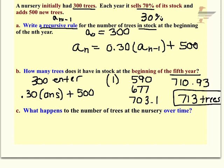And then part C says, what happens to the number of trees at the nursery over time? Now, if you keep pressing enter on your calculator, it's going to start approaching 714.2857, et cetera, and then it just plateaus. So it's kind of like an asymptote. From a business standpoint, you're going to reach the point where your number of trees in stock plus the 500 new trees is just going to approach a number where it's not growing anymore. And that's what's happening to this particular nursery.